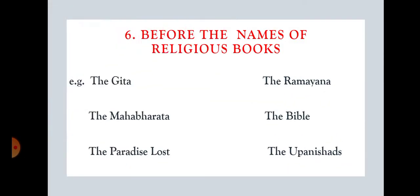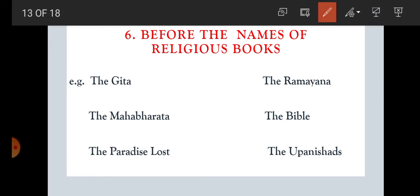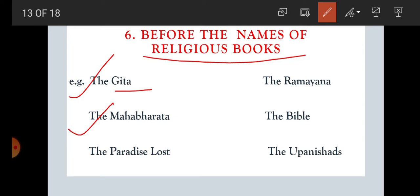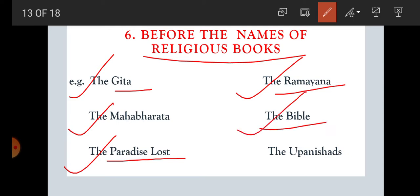Rule number six: before the names of religious books, we put 'the.' For example: the Gita — Gita is a religious book. The Mahabharata — it is a religious book. The Paradise Lost — it is an important book also related to the Bible, so 'the Paradise Lost.' The Ramayana — a religious book. The Bible — a religious book. The Upanishads — a religious book. So before the names of religious books, we use 'the.'